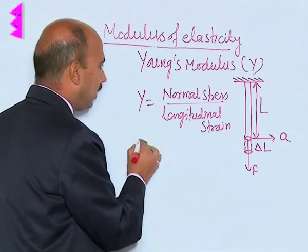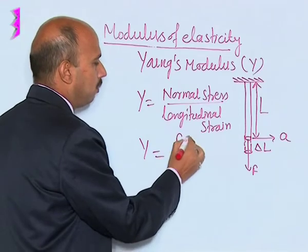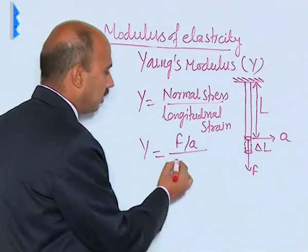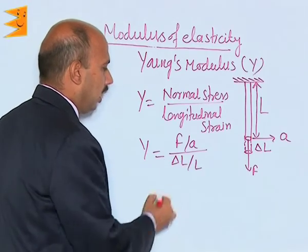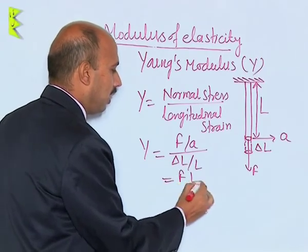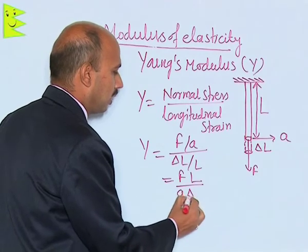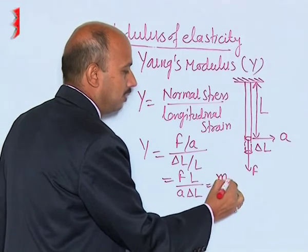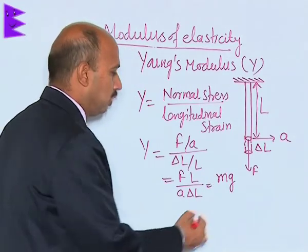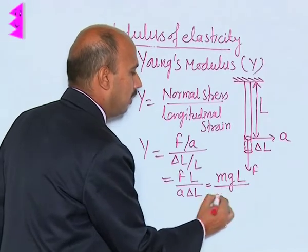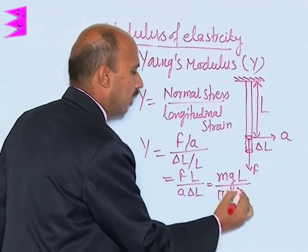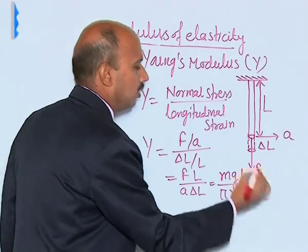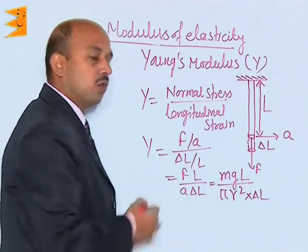We can write Y is equal to F upon A divided by delta L upon L, which gives F times L upon A times delta L. Also, if you are hanging a weight, F can be written as M times g, so Y equals M g L divided by pi R squared times delta L, where R is the radius of the cross section. This is the formula for Young's modulus.